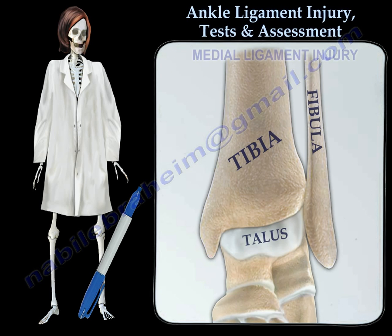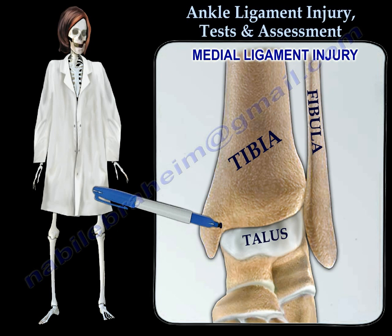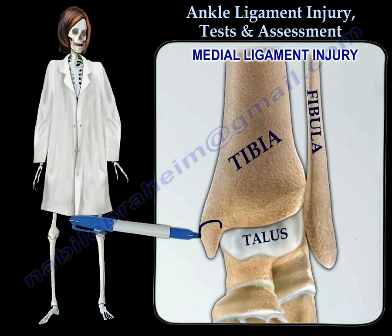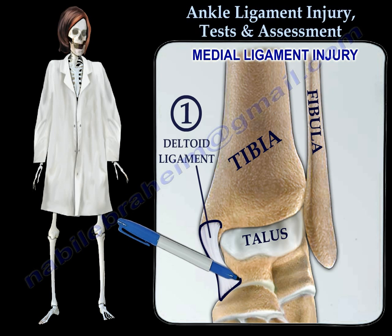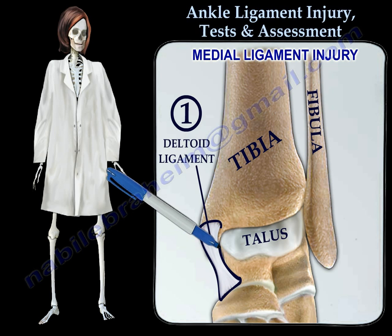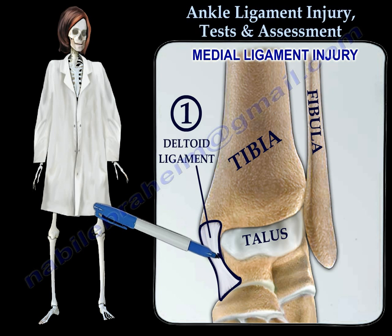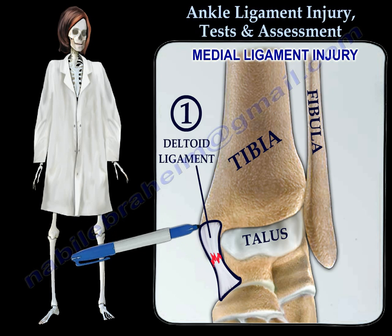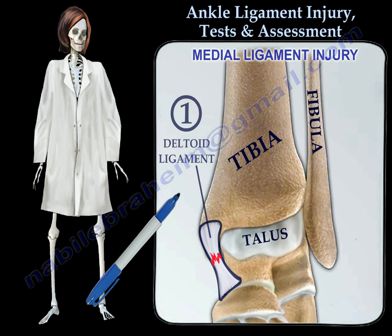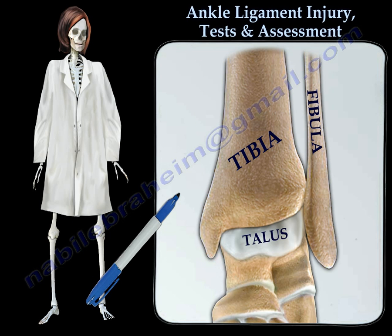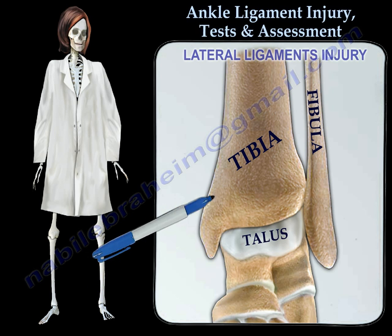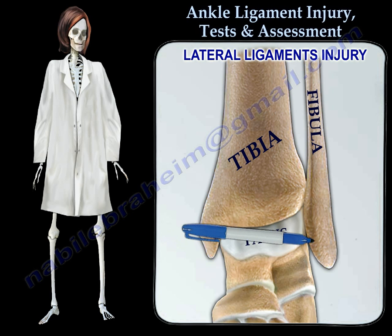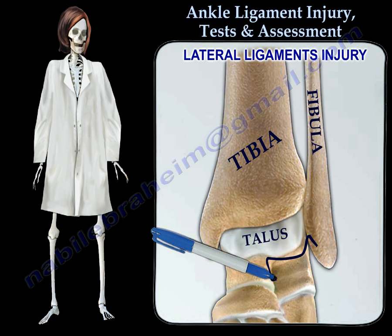Injury to the deltoid ligament occurs on the medial side of the ankle joint and is usually associated with fracture. Injury to the lateral side ligaments is referred to as a low ankle sprain.